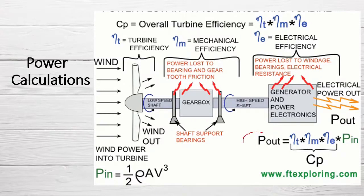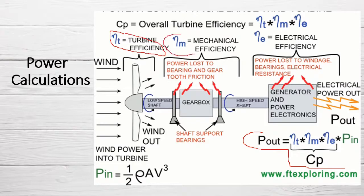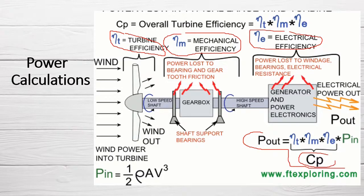The power output of a wind turbine is the product of four terms: η_T, η_M, η_E, and power input, where η_T is turbine efficiency, η_M is mechanical efficiency, and η_E is electrical efficiency. These three terms multiplied together are also known as C_P, the overall turbine efficiency. So power output is equivalent to overall turbine efficiency multiplied by power input.